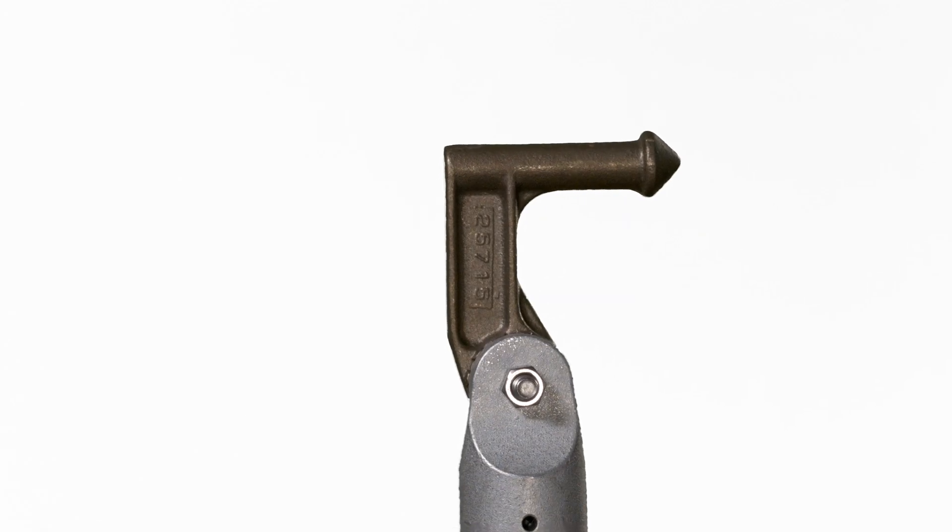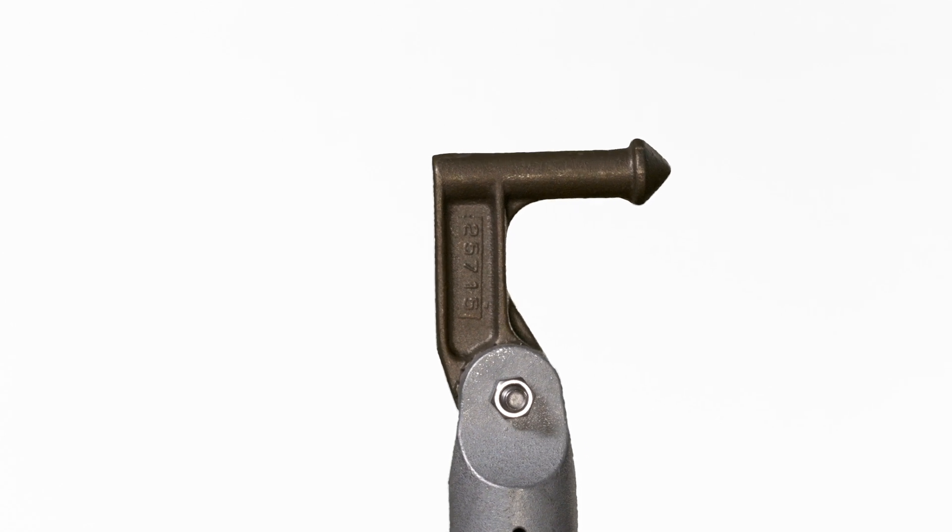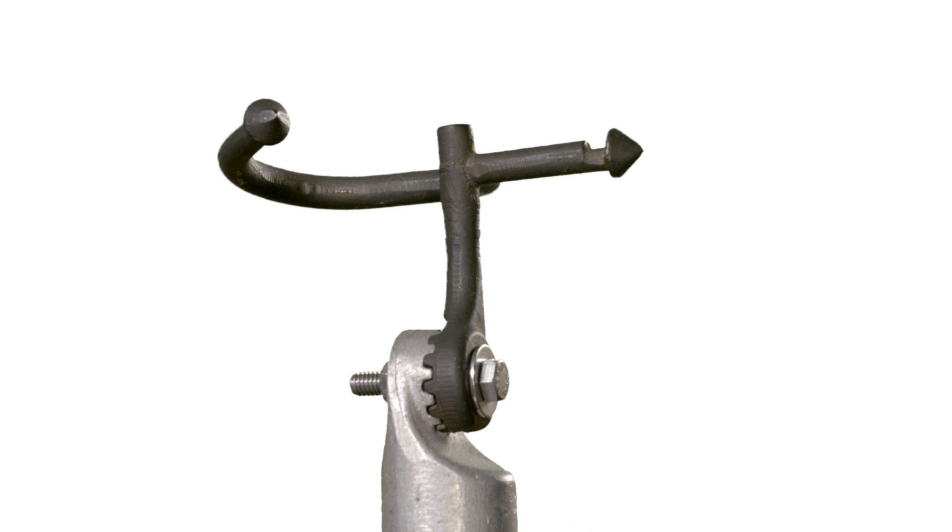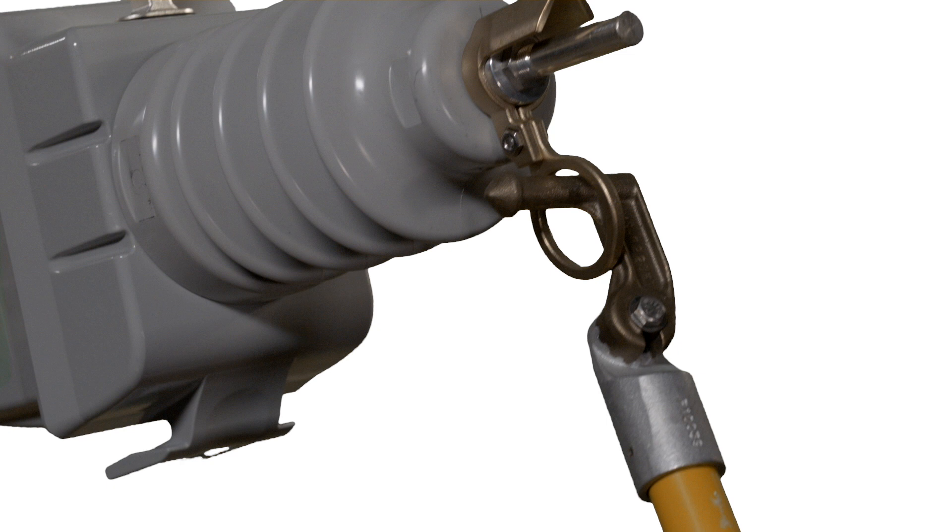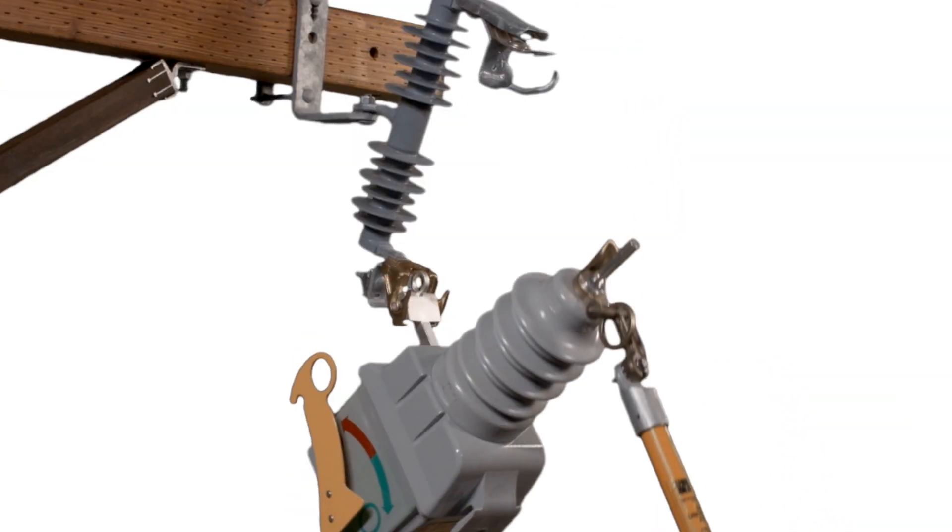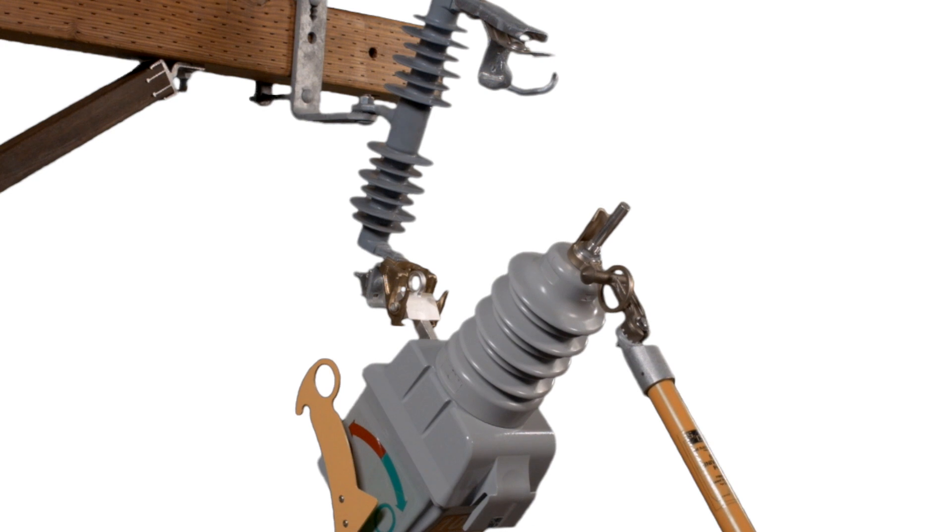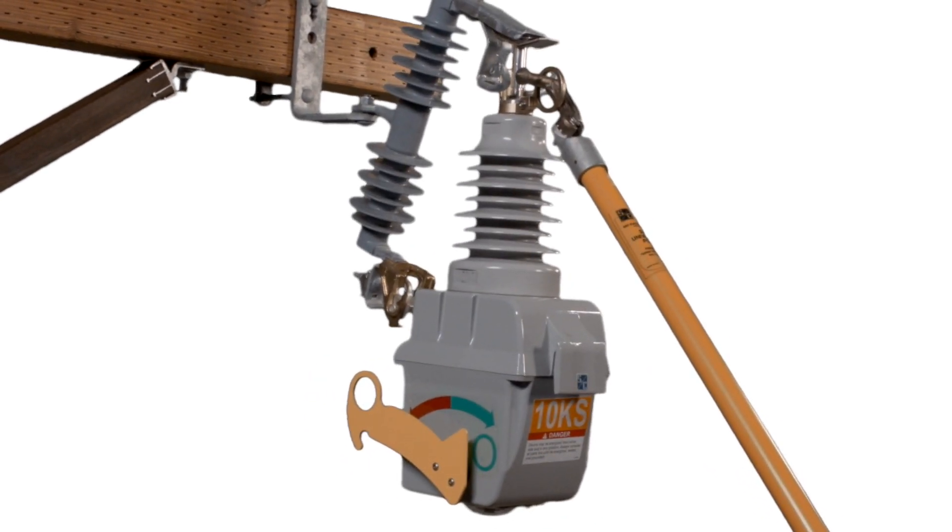Close the VacuFuse Interrupter into its cut-out mounting using a hook stick fitted with a distribution prong or using the straight prong of the S&C Talon Handling Tool. Insert the tool into the pull ring and swing the VacuFuse Interrupter to within approximately 45 degrees of the fully closed position. With a firm grip on the hook stick, drive the VacuFuse Interrupter closed with forward force. Maintain this force until the VacuFuse Interrupter properly closes and latches into the cut-out mounting.